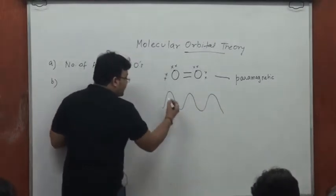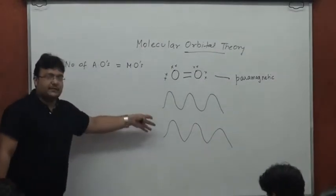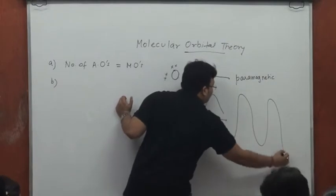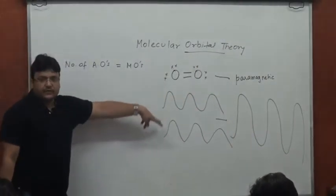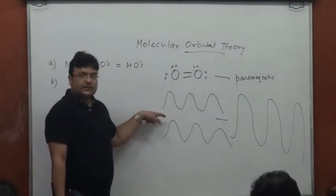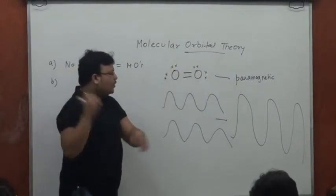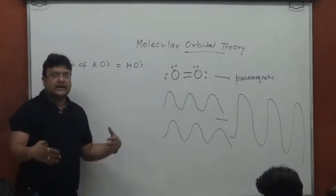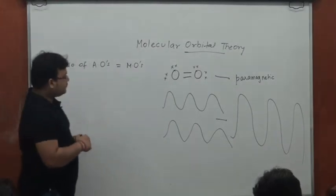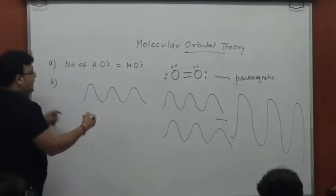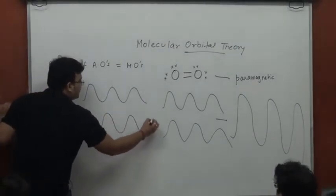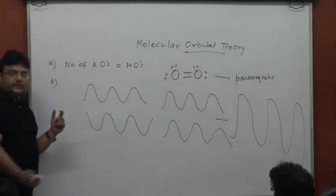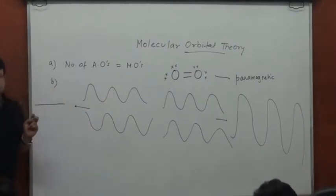Whenever you have two waves which are completely in phase, this superposition of waves results in a stronger wave with higher peaks and lower troughs - this is called constructive interference. On the other hand, when one wave merges with another that looks completely antagonistic - where the peak of one is in sync with the trough of the other - the two waves completely cancel out and get neutralized.